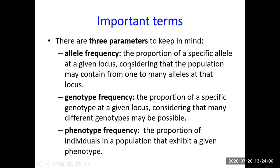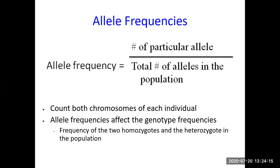Allele frequency, in a simplified case, assumes just two alleles for eye color: capital B and small b. We need to know at what rate capital B and small b are occurring in the population. To calculate allele frequency, we count the number of a particular allele in the population and divide by the total number of all alleles — the total of capital B and small b combined.